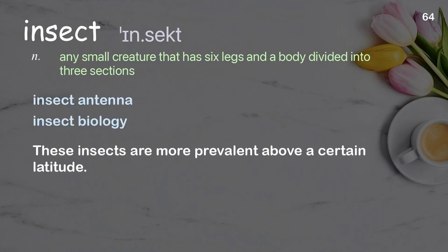Examples: Insect antenna. Insect biology. These insects are more prevalent above a certain latitude.